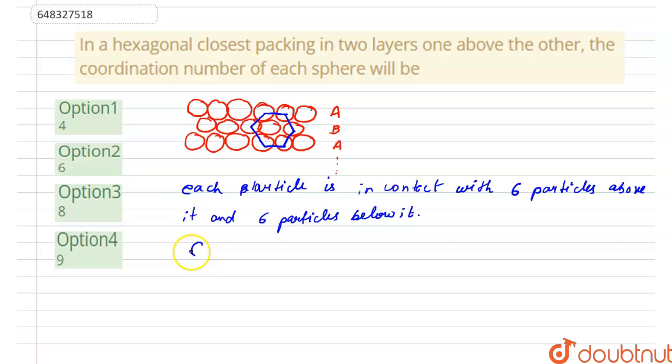So, total coordination number, coordination number, is equal to 12. Thus, coordination number per atom, coordination number per atom, will become six.